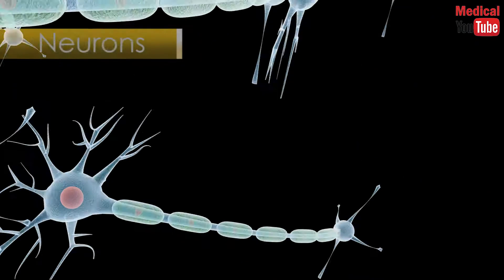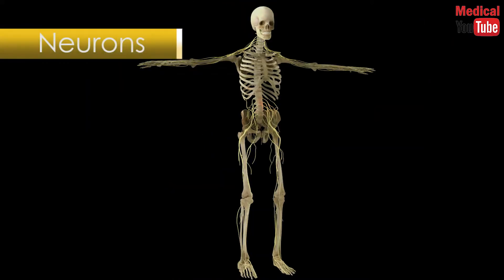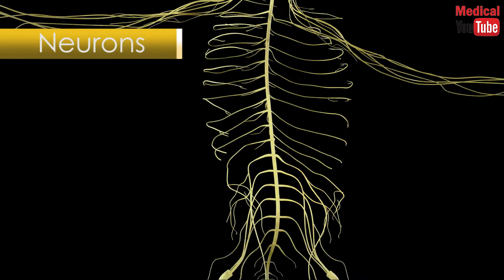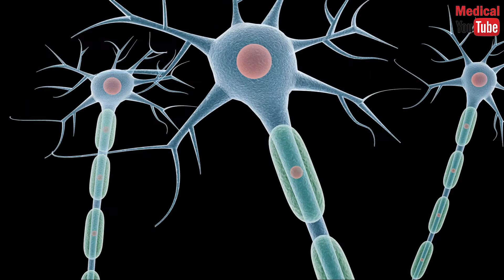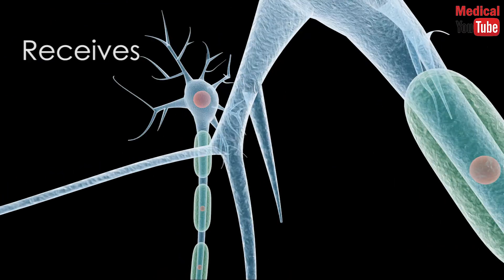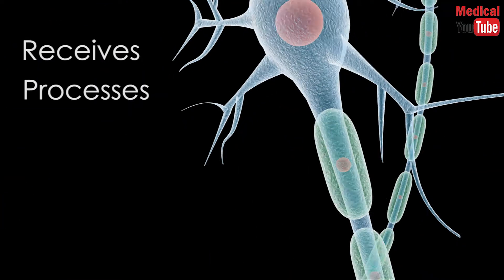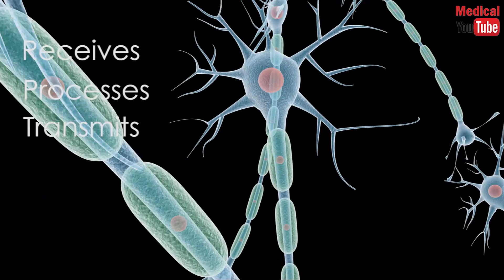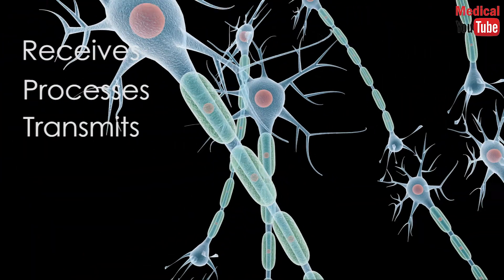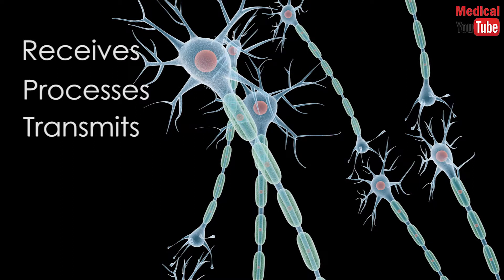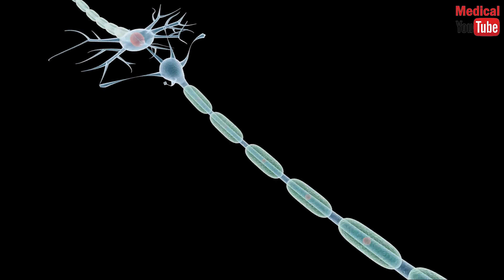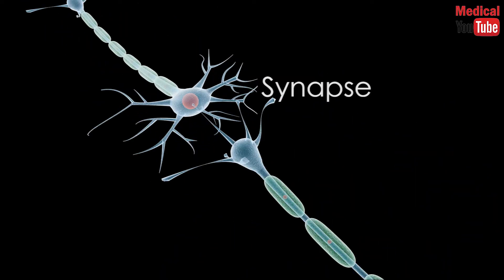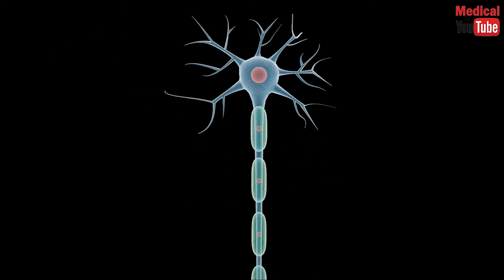A neuron, or nerve cell, is the building block of the nervous system. It is an electrically excitable cell that receives, processes, and transmits information through electrical and chemical signals. These signals between nerve cells occur via specialized connections called synapses.